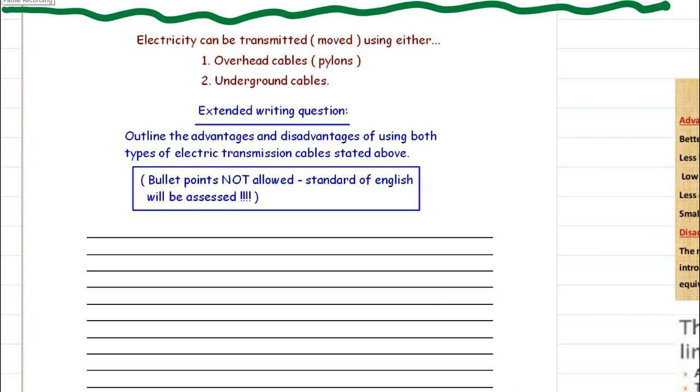Final page in the booklet is an opportunity to improve your written answers to a typical six mark question you may come across in the exam. Now my advice is always to look at these type of questions and see if you can split them down to make it easier and to make sure you maximize your marks. What's it asking? Electricity can be transmitted, moved either using overhead cables or underground cables. Outline the advantages and disadvantages using both types of cables. So split it into four paragraphs. Paragraph one, advantages of overhead cables. Paragraph two, disadvantages. Paragraph three, advantages. Paragraph four, disadvantages of underground. Where do you get that knowledge from?